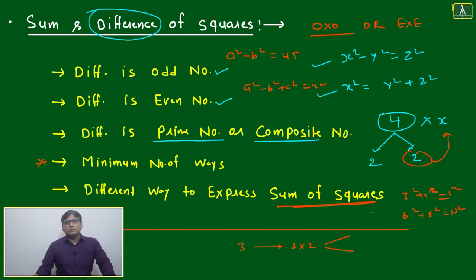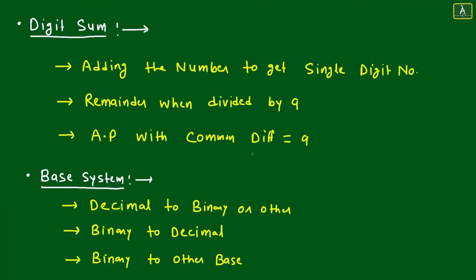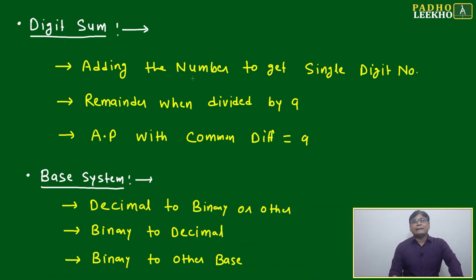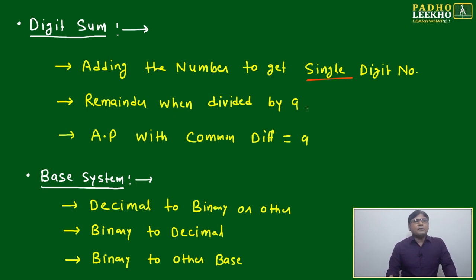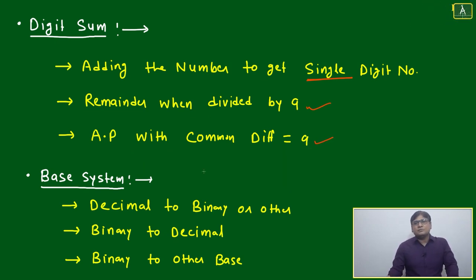Next is digit sum. The digit sum is found by adding digits of a number to get a single digit. This gives a sense of how numbers repeat. The same concept can be expressed as the remainder when divided by 9, or as an arithmetic progression with a common difference of 9 — all three approaches connect the digit sum concept.